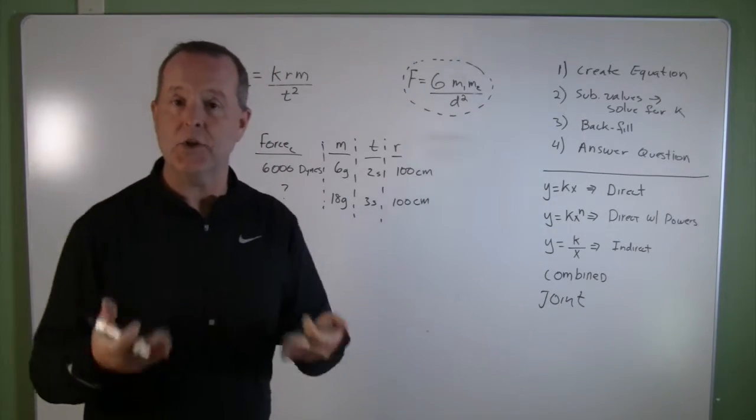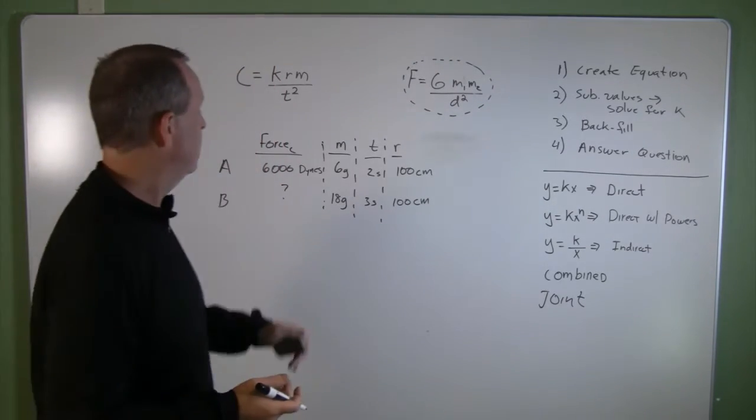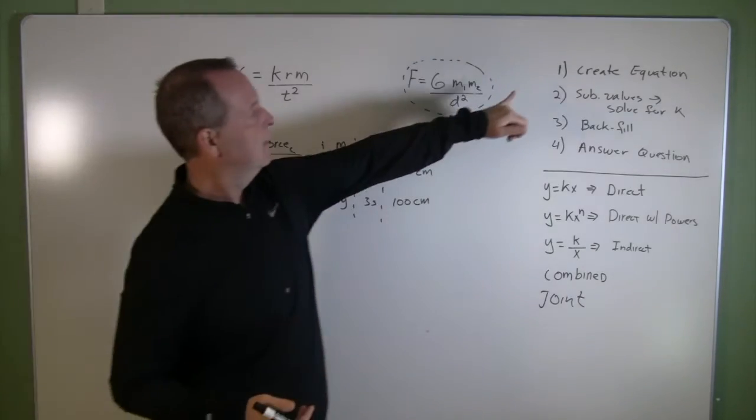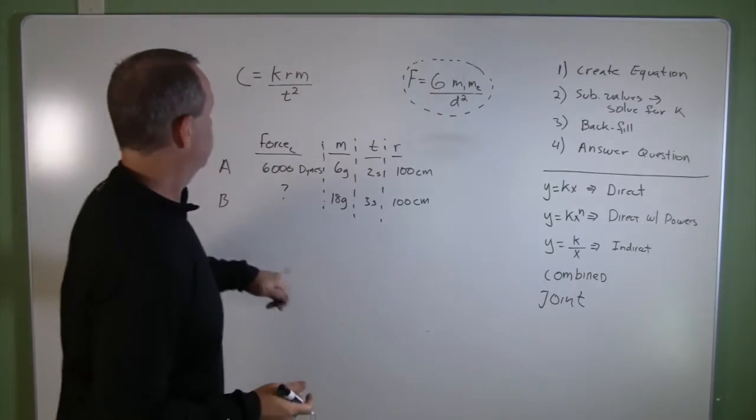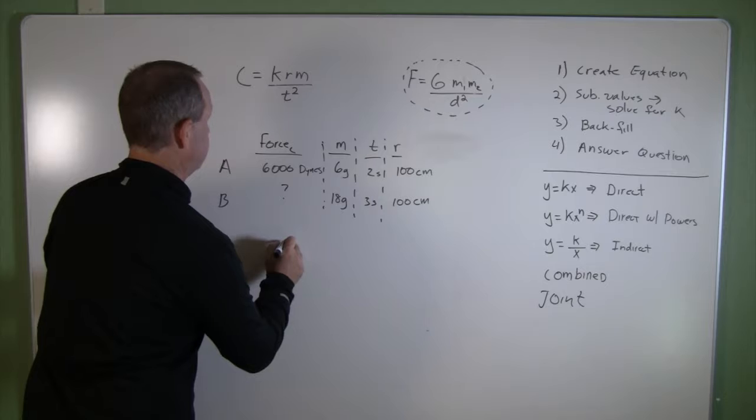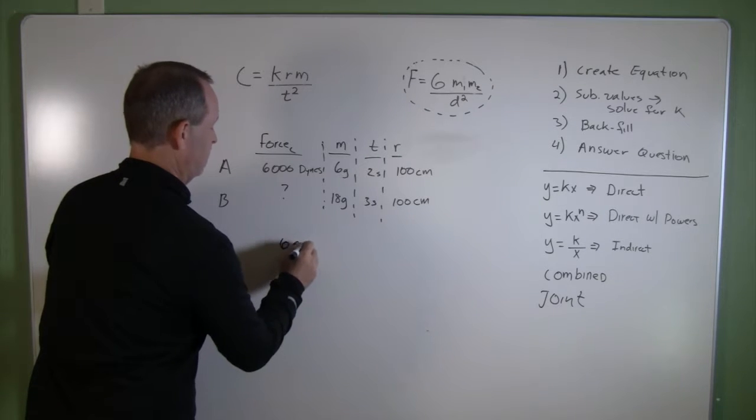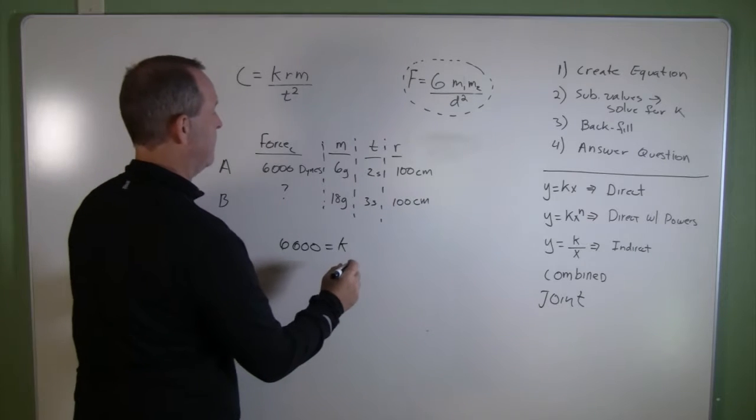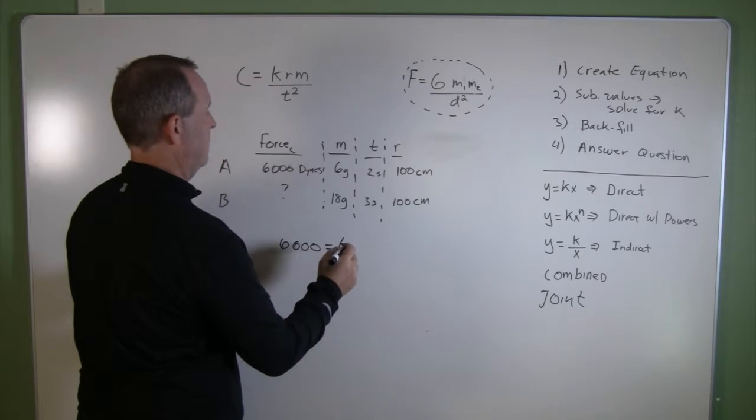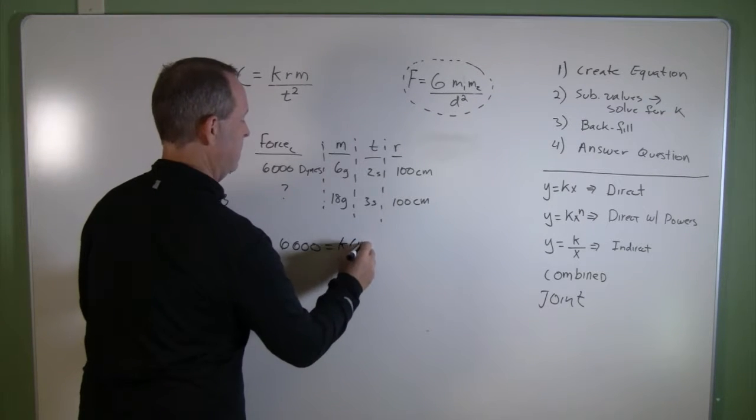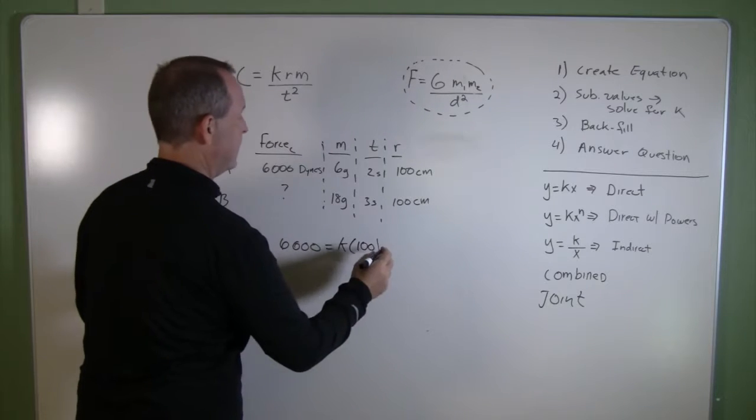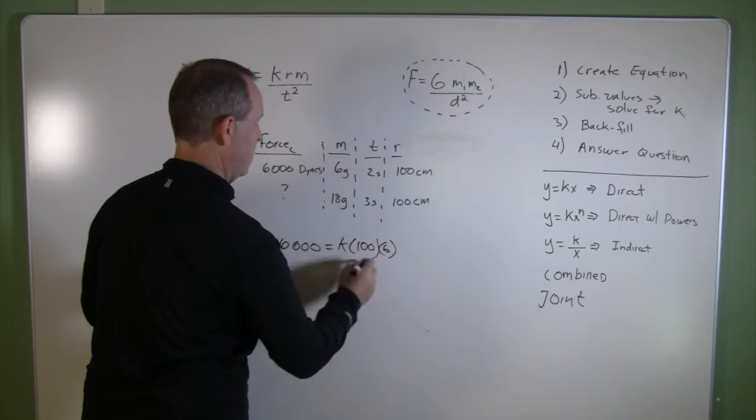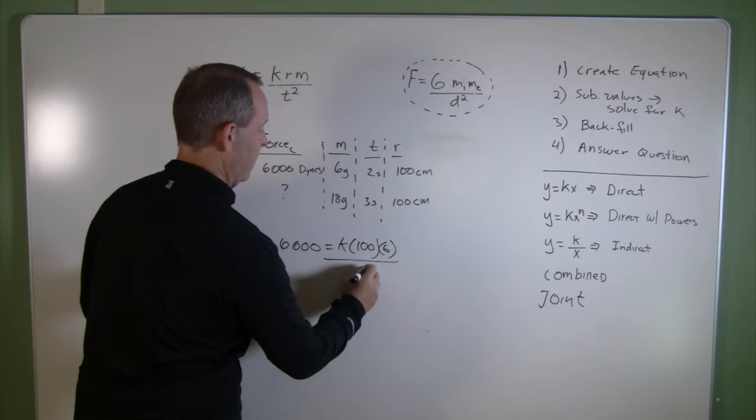So that's our initial test case. From there, we're going to take that information, create the equation: 6,000 equals K times my radius, 100 centimeters, times my mass, which was 6 grams, divided by time squared.